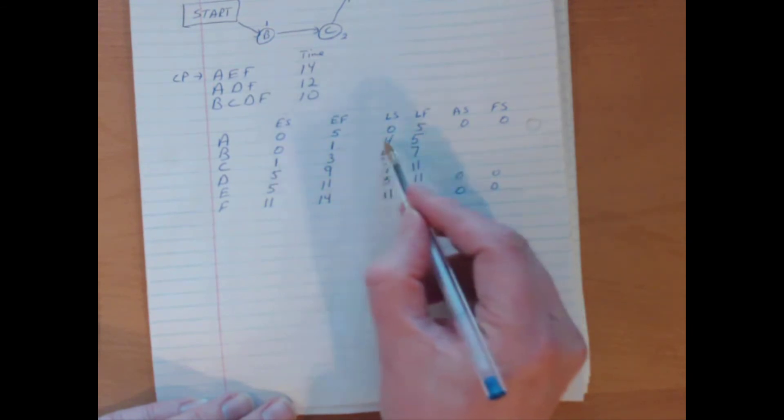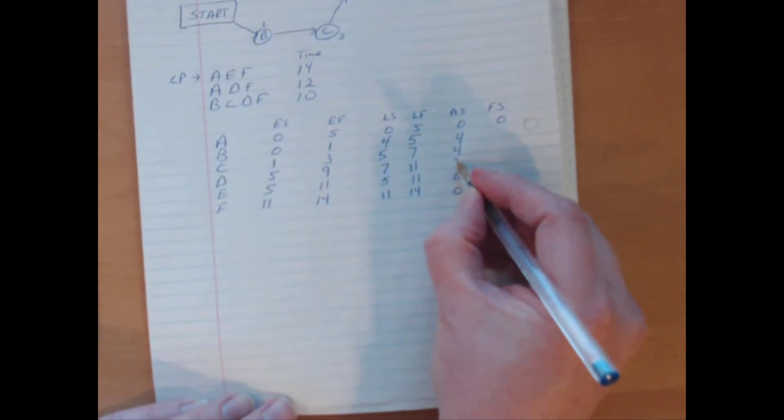Activity slack, if we remember, is the length of time where if you delay a certain activity, the maximum amount that you can delay a certain activity before the entire project is delayed. Typically, mathematically, we see it as the difference between the start times, latest start minus earliest start, or the difference between the finish times, earliest finish minus latest finish. So we can either go 5 minus 1, 4 minus 0. Either way, we get a 4. Same story with C. We can go 5 minus 1 or 7 minus 3. Either way, we get a 4. And D, 11 minus 9 or 7 minus 5. Either way, we get a 2.